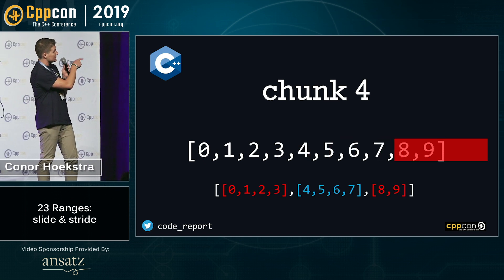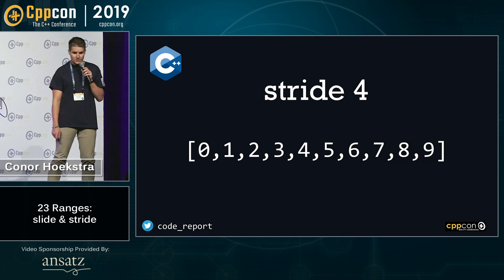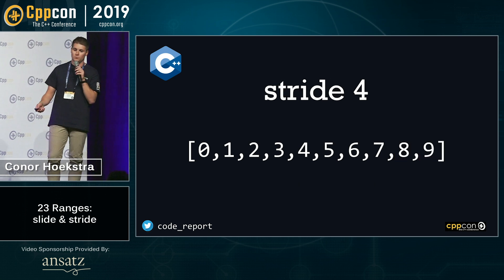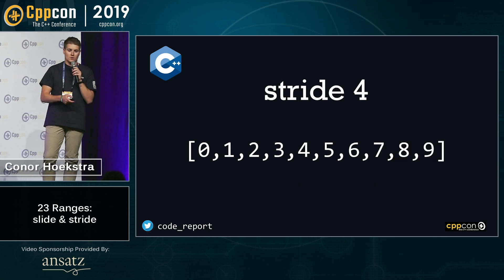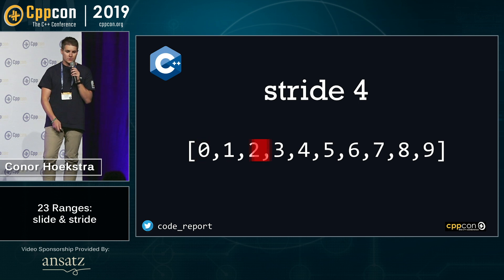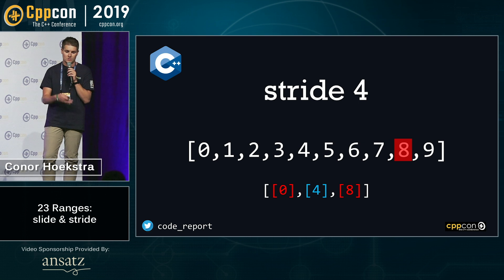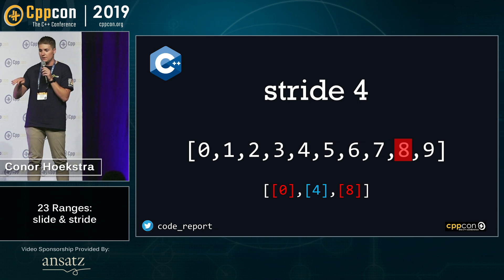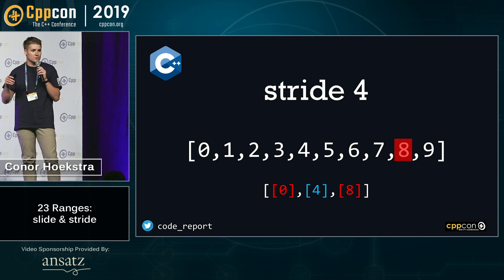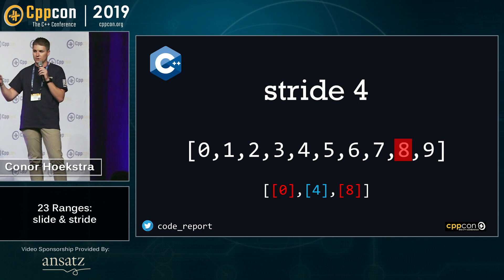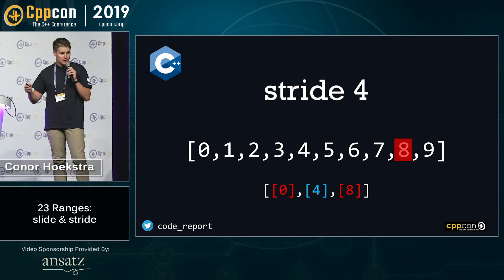Chunk gives us the following range of ranges. Finally, stride with k equal to four looks at one element at a time and strides by four — so we first look at zero, then skip to four, then skip to eight — giving us a range of ranges: zero, four, and eight. Note that we might just want this to be a single range, so we could use a Haskell concat, a Pythonic join, or a range-v3 join.